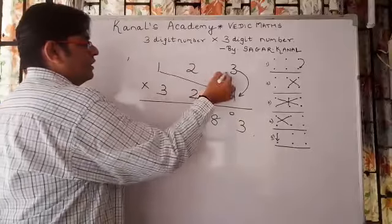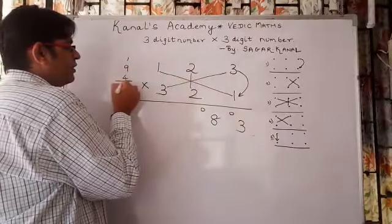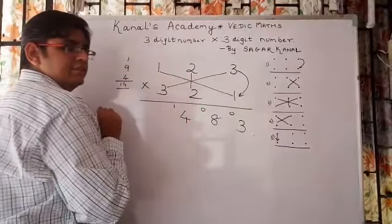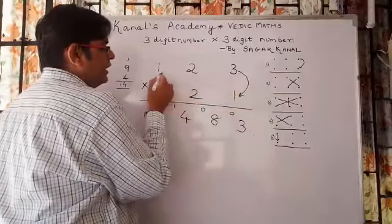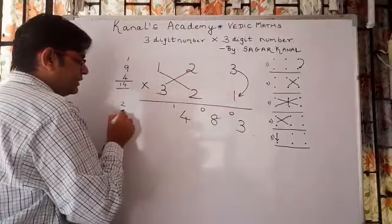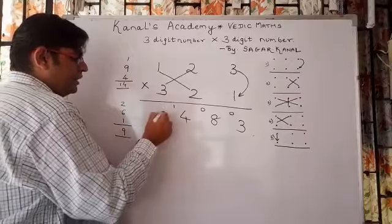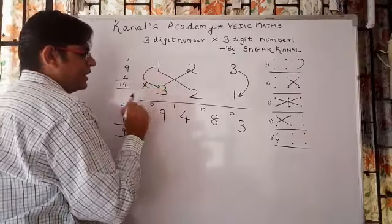Next step: 1 times 1 is 1, 3 times 3 is 9, 2 times 2 is 4, total 14. Nothing gets added - 4, carry 1. Next step you will be using these numbers: 2 times 1 is 2, 3 times 2 is 6, add 1 here, total is 9, zero carry.